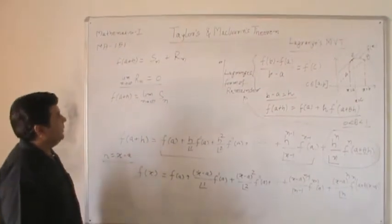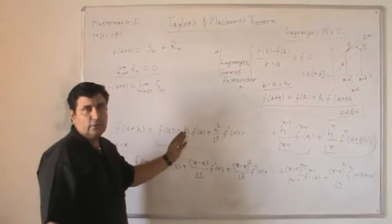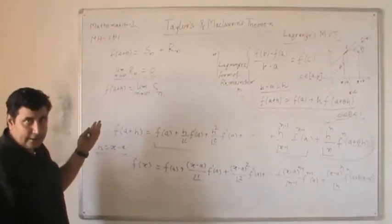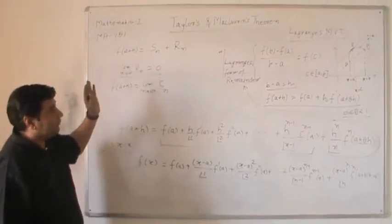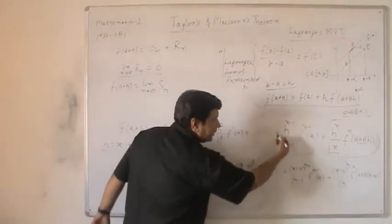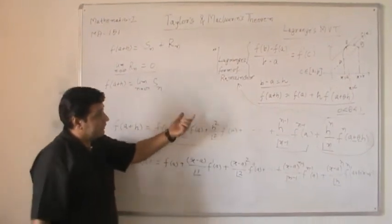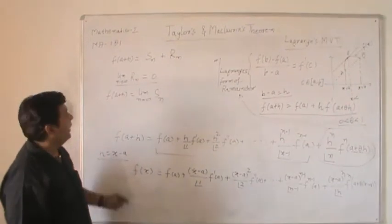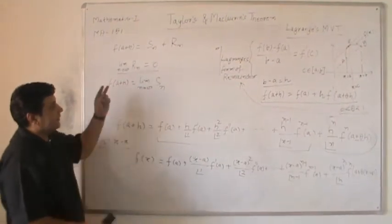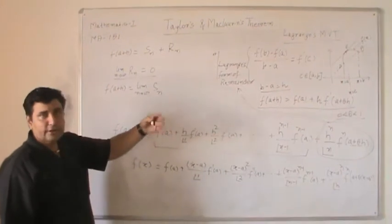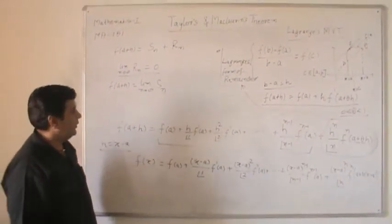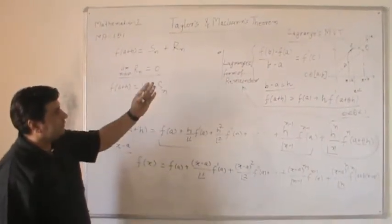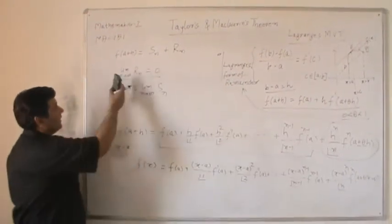For many functions we can calculate the first four or five terms to write the infinite series expansion. If we can find the form of the nth derivative, we will be able to write the general term of the infinite series and also decide the exact value of the remainder and how the remainder term tends to 0 as n tends to infinity. We will study remainder terms with elementary functions, and for remaining functions we write formal infinite series expansion.